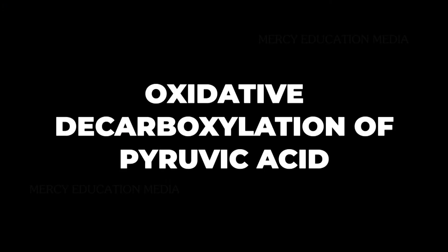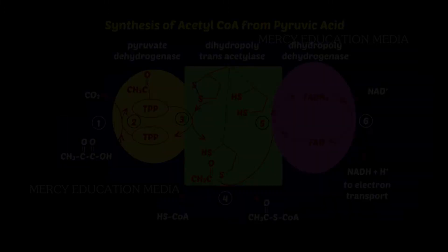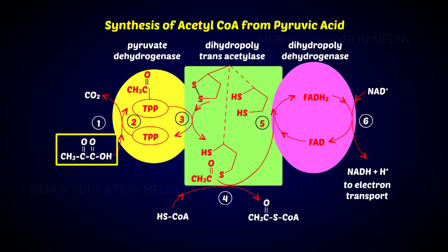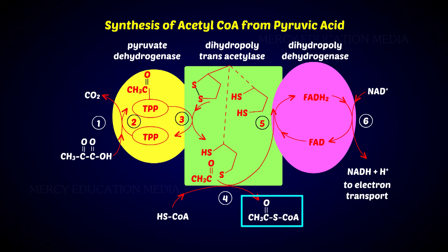Let us see about oxidative decarboxylation of pyruvic acid. The two molecules of pyruvic acid formed from a glucose molecule move into the mitochondria and are oxidized and decarboxylated to two molecules of acetyl-coenzyme A, i.e., acetyl-CoA.